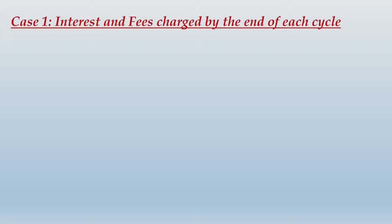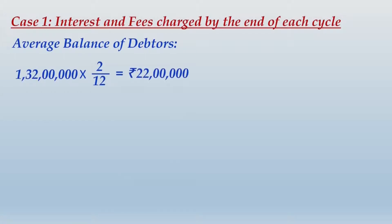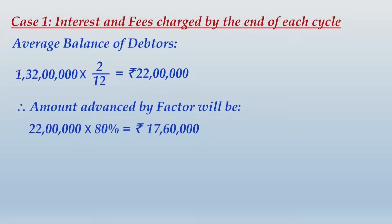Case 1 — interest and fees charged at the end of each cycle. First, calculate the average balance of debtors: 1 crore 32 lakhs into 2 by 12, because the credit period is 2 months, giving 22 lakhs as the average balance of debtors. The amount advanced by the factor will be 80 percent of 22 lakhs, which is rupees 17 lakhs 60,000.